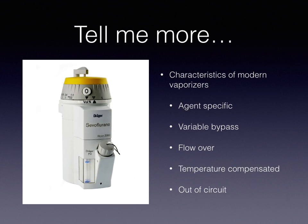Characteristics of modern vaporizers are that they're agent-specific — that is, they're only for use with a particular agent. They're variable bypass, meaning they divide or split the total fresh gas flow through the vaporizer into two portions. They're flow-over, temperature-compensated — equipped with an automatic temperature-compensating device that maintains constant vaporizer output over a wide range of temperatures — and they're out-of-circuit, as you can see in the picture.